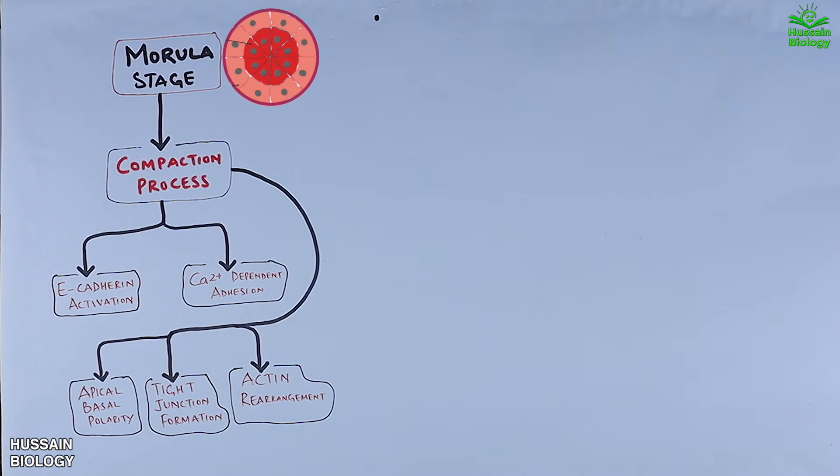The apical basal polarity is established, helping the outer cells orient themselves with definite axes. Tight junction formation ensures the sealed environment within the embryo. Lastly we see the actin rearrangement which strengthens cell connections and contributes to the structural organization of the embryo.